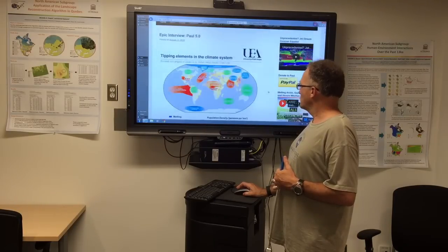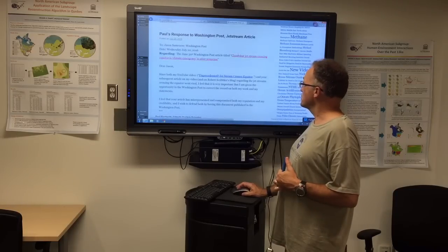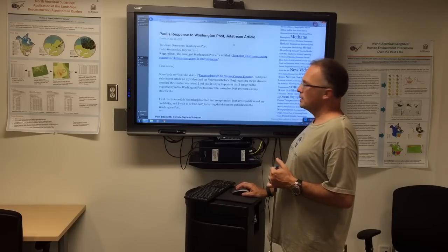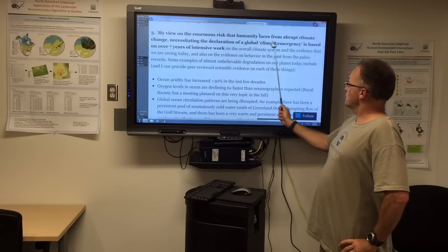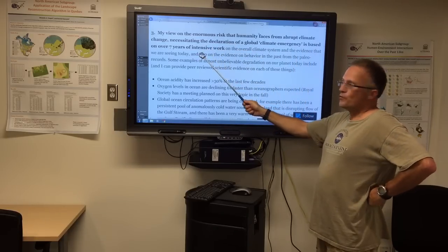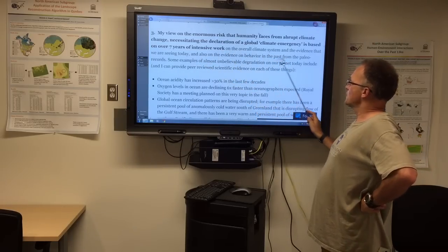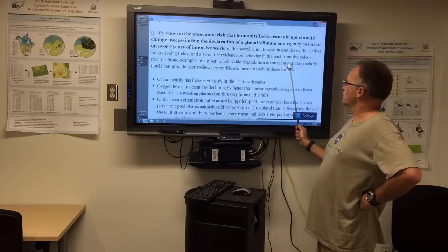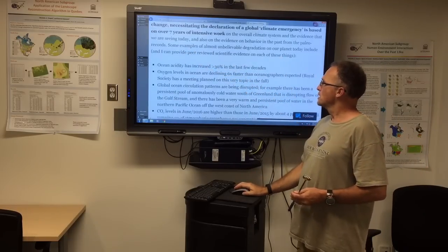If you scroll down to a bunch of different blogs, there was an incident with the Washington Post about jet streams crossing the equator. This is my response here. I talked about why I think we're in a global climate emergency. My view on the enormous risk that humanity faces from abrupt climate change necessitates a declaration of a global climate emergency. And this is based on over seven years of intensive work that I've done on the overall climate system. Basically what we're seeing today, what happened in the past from the paleo record, and some examples of almost unbelievable degradation on our planet today. I can provide peer-reviewed scientific evidence on each of these things, but I'm going to go into them now in more detail.